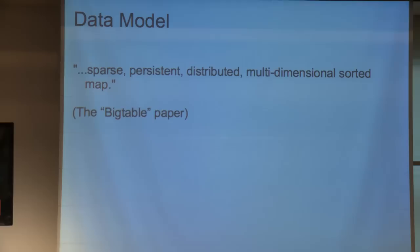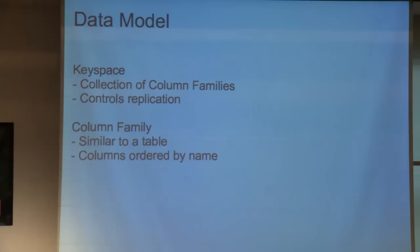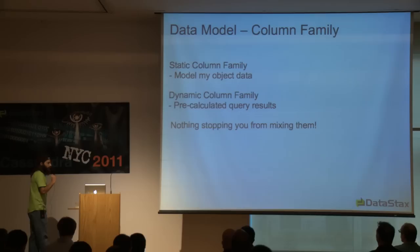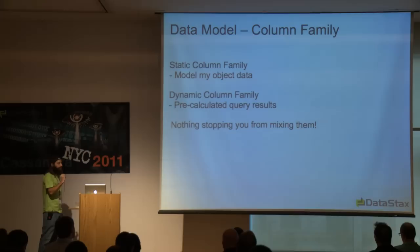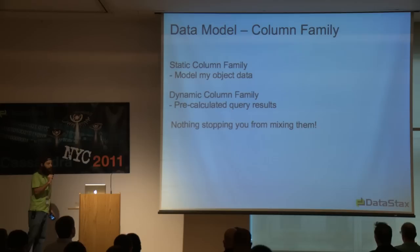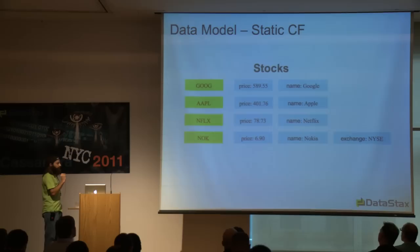The data model is best described as a sparse, persistent, distributed, multi-dimensional sorted map. Key spaces are collections of column families — the unit of control for replication, similar to a database catalog. Column families are similar to tables; columns are ordered by column name. There are two usage patterns: static column families to model object data, and dynamic column families for pre-materialized queries, time series data, or data where the column name is dynamic. There's nothing stopping you from mixing both.